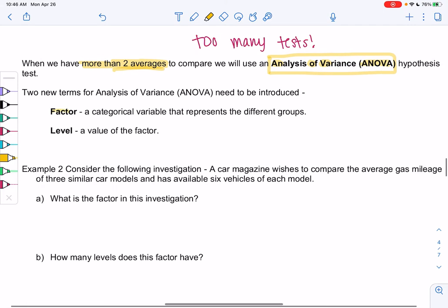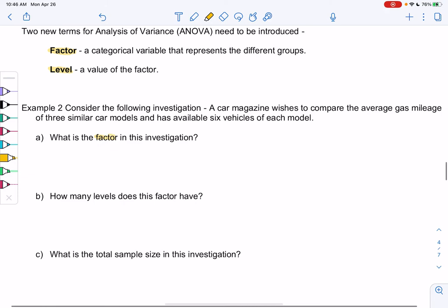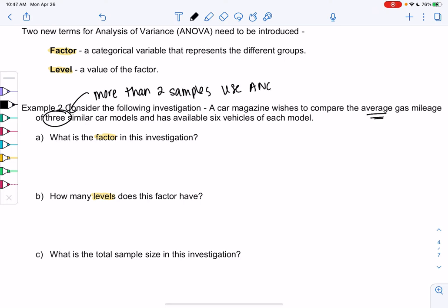We're going to add a little bit of vocab before we do one. Factor is our categorical variable for the different groups, and level is a value in the factor. So in the same investigation, a car magazine wishes to compare the average gas mileage of three similar cars. Because it's three, it's more than two, we have to use ANOVA.